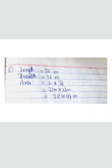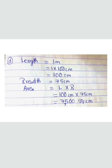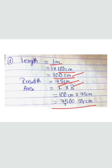Now part D: length is 1 meter, breadth is 75 centimeters. We convert meters to centimeters: 1 × 100 = 100 centimeters. So length is 100 centimeters, breadth is 75 centimeters. Area equals length multiplied by breadth: 100 × 75 = 7500 square centimeters.